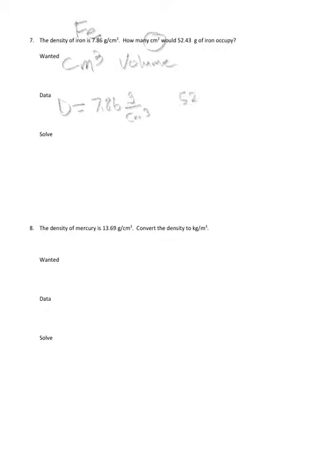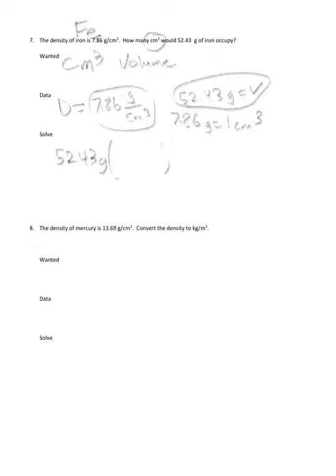And then we got 52.43 grams is our mass. So we've got this equivalence that we need to make: 7.86 grams is equal to one cubic centimeter. So 52.43 will be our given, 52.43 grams.